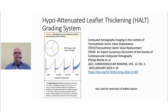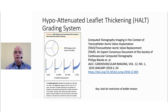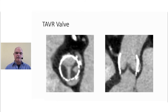Lastly, I want to talk about HALT — hypoattenuating leaflet thickening — which may represent thrombus on the leaflets. To image this, you need the ability to image through the stent frame or through the basal ring of the surgical heart valve. This is a grading system published in 2019 showing how hypoattenuating leaflet thickening occurs and progresses. To image this after valve implant, you need both the temporal resolution as well as the photon flux — the power to image at appropriate kV and mAs — to image inside the transcatheter heart valve.